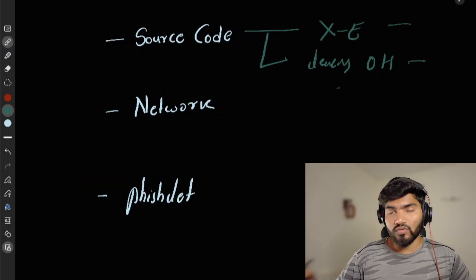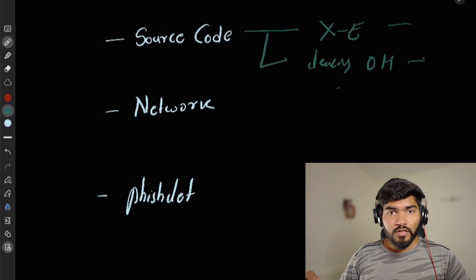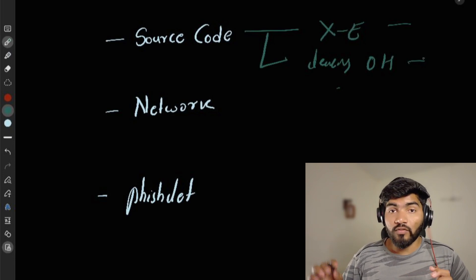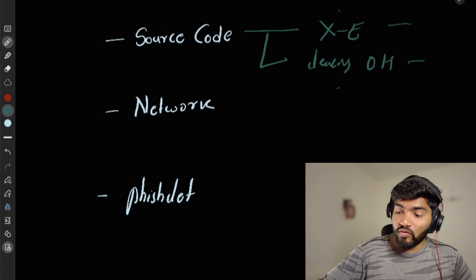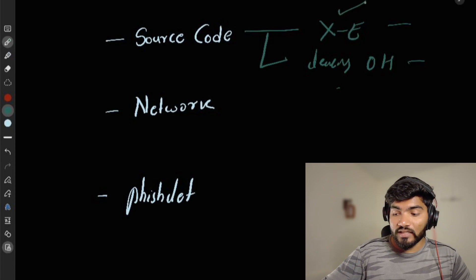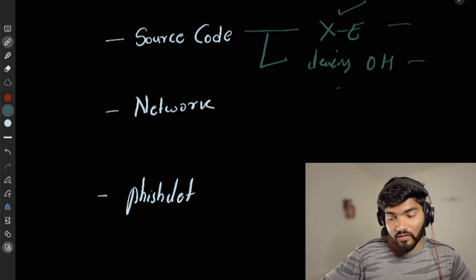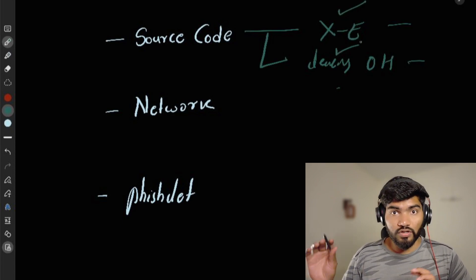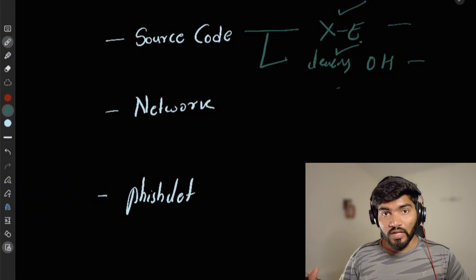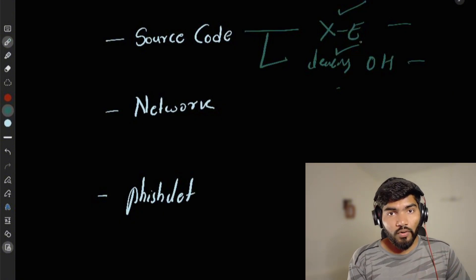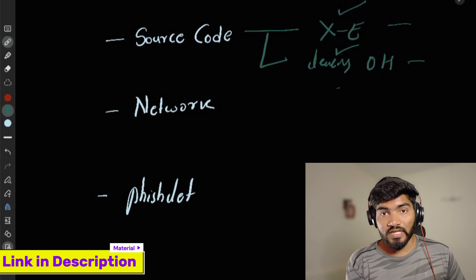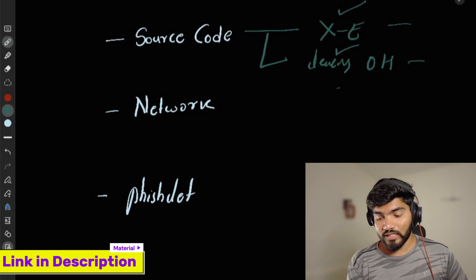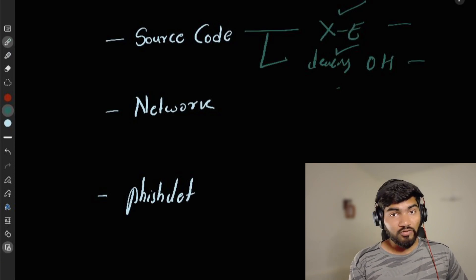The solution for the source code issues is simple: you have to modify your evilginx source code and remove where it adds the X-E header and where it leaks the original host. I already have the fixed source code available in the evilginx training material, so you can check that out.